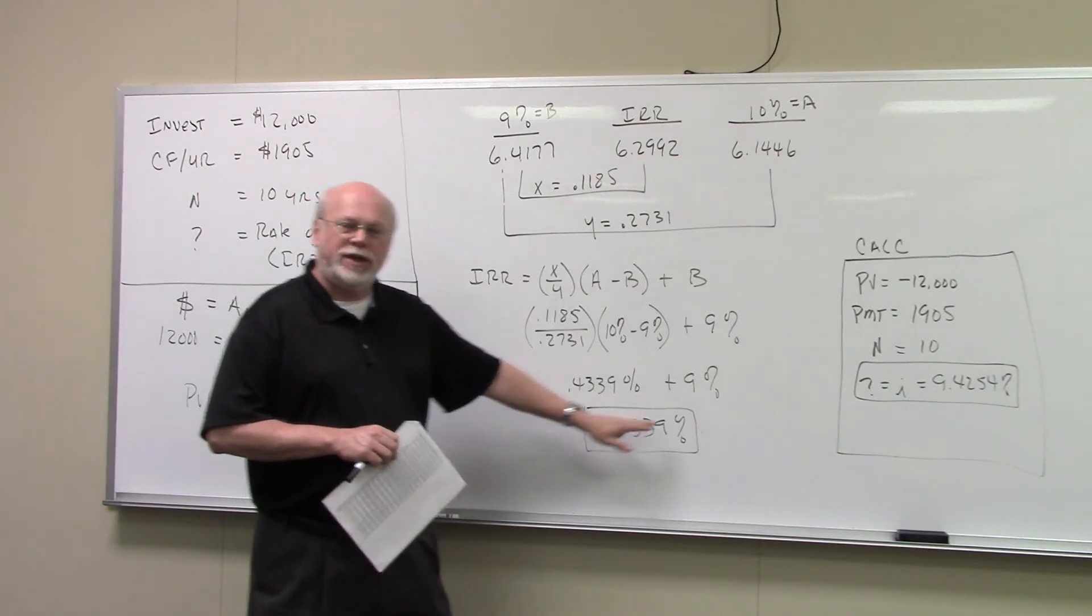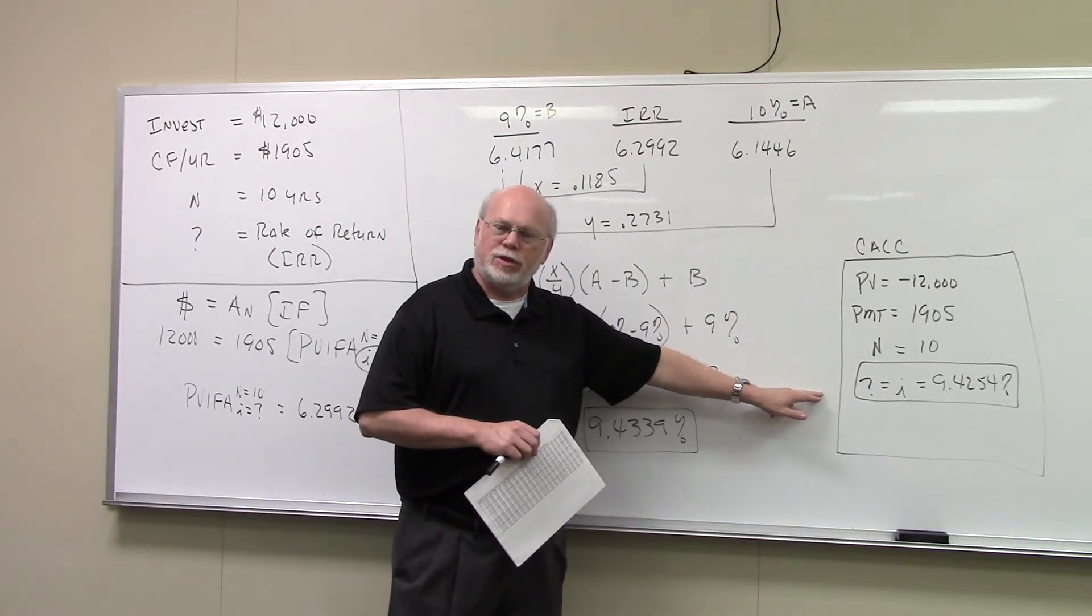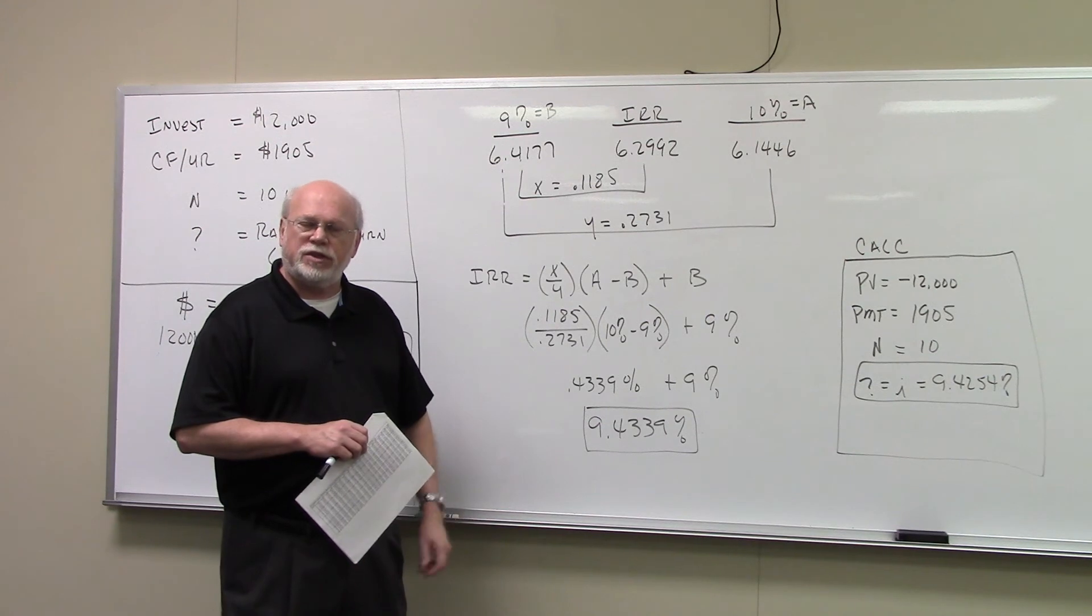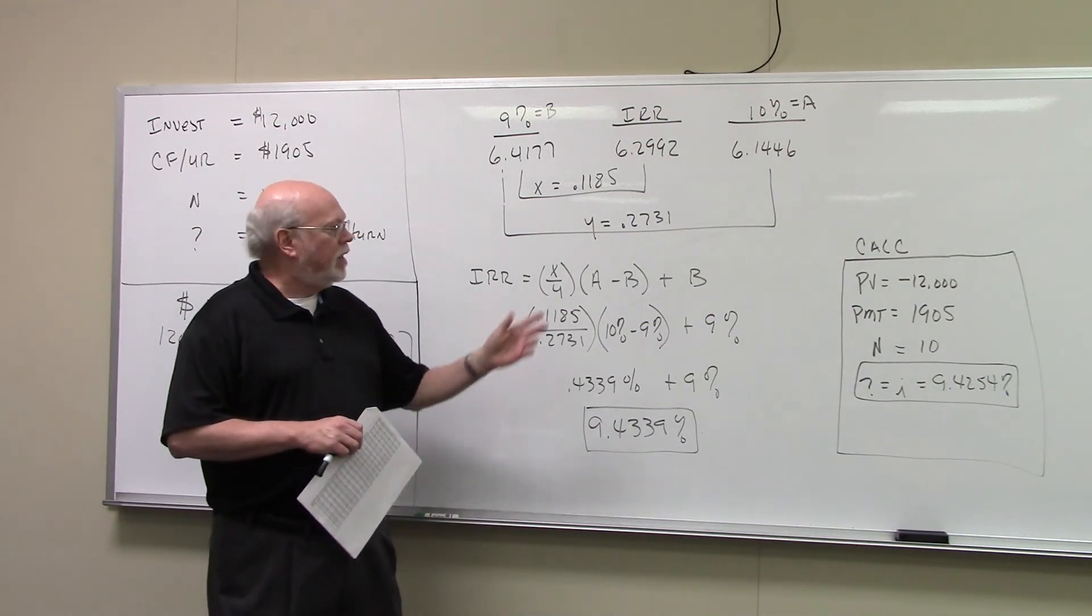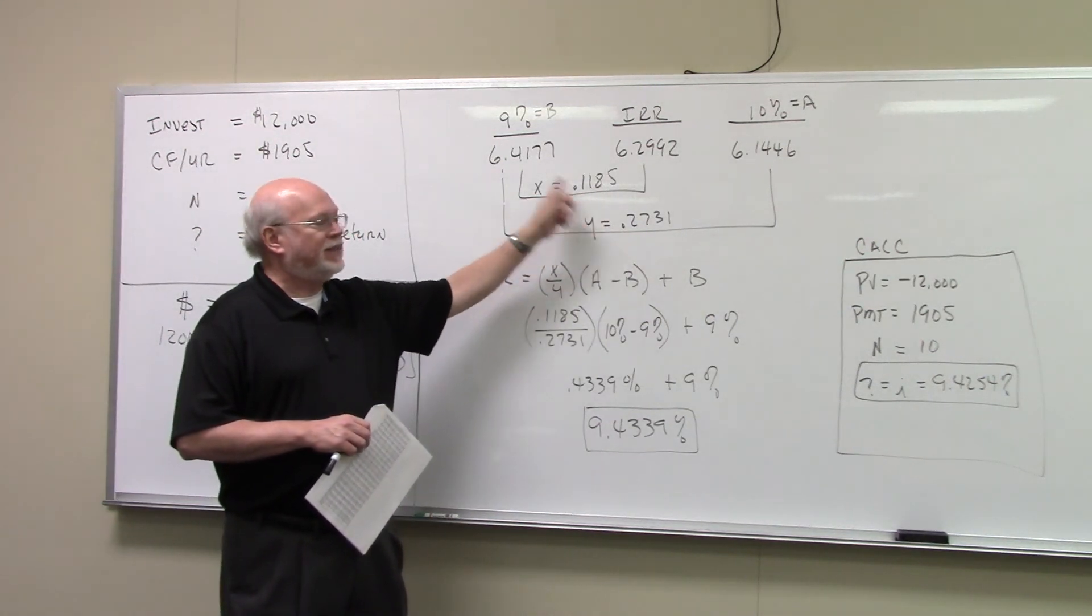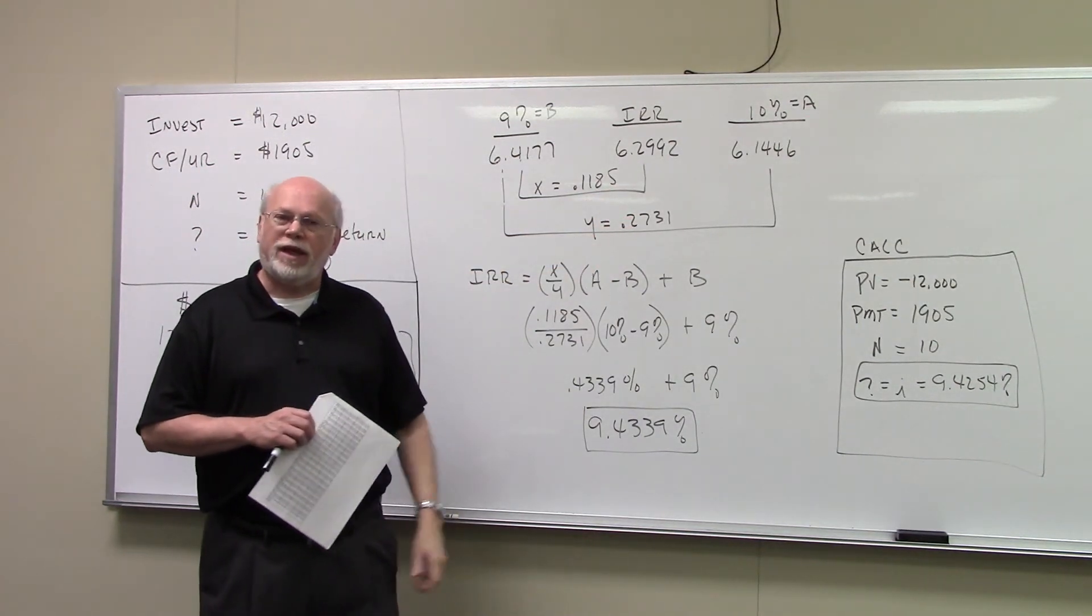Is there a difference between this number and this number? Absolutely. Again, what's the cause of that difference? It's rounding. We round off when we did these things. The interest factors are rounded off to four places. All that rounding error gives you this difference here.